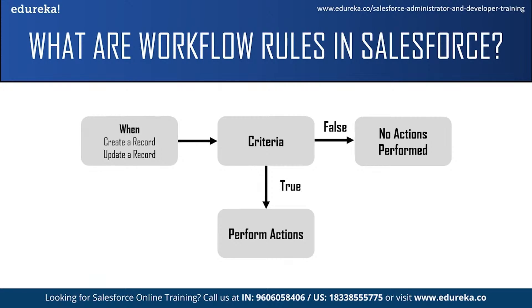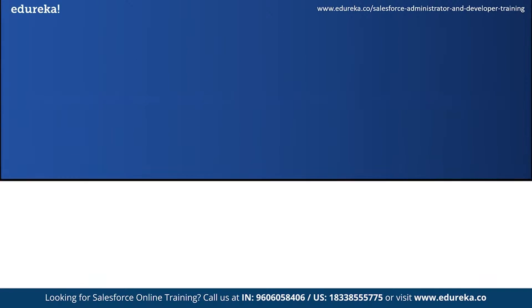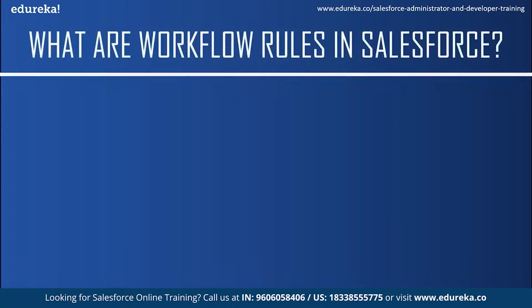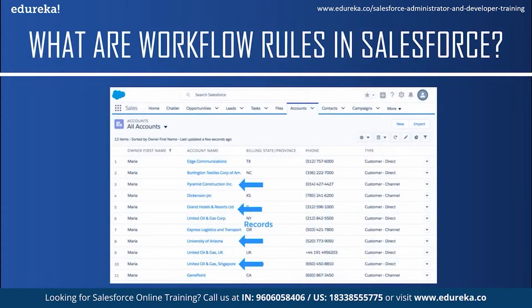Objects in Salesforce are like leads, accounts, opportunities, contacts, or any other custom object. Fields are basically the columns in the table that tell us about what is stored in the records. Records are the rows or any entry in the table — basically the information of an individual.